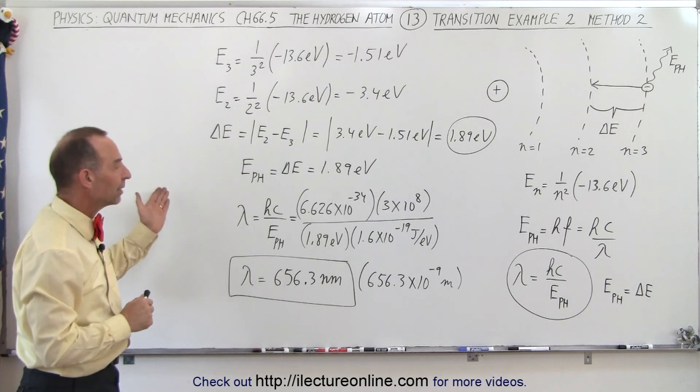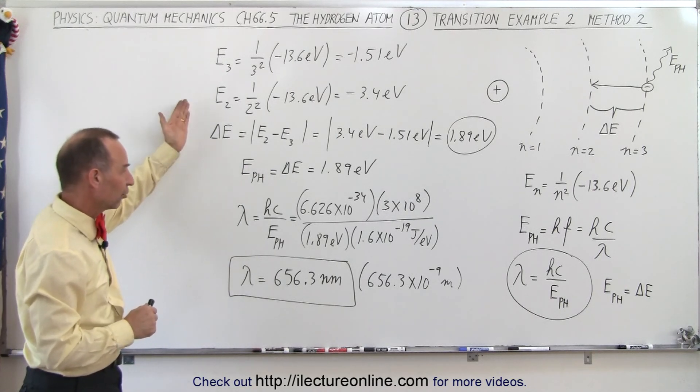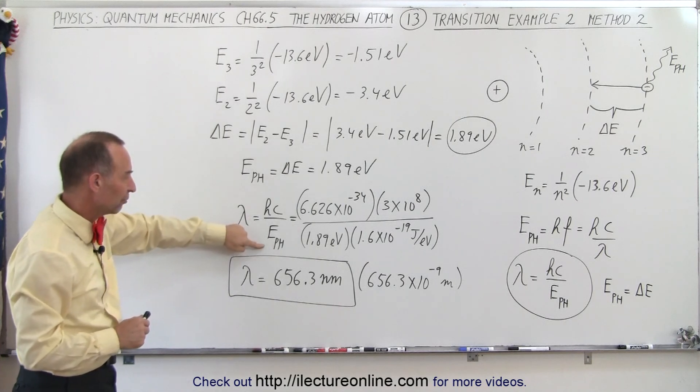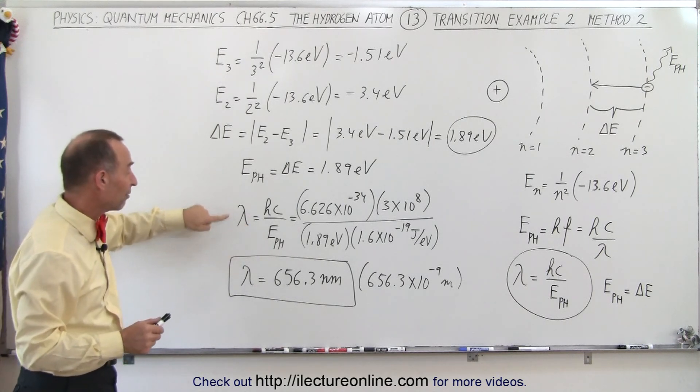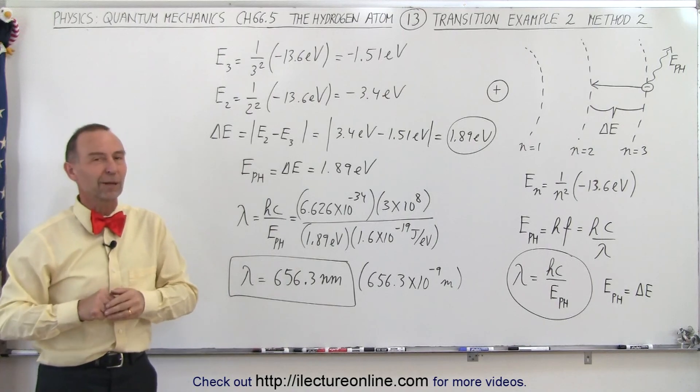So this is how we calculate the energy difference first and then associate that energy difference with the energy of the photon, which then gives us the wavelength of the photon. That's how it's done using method 2.